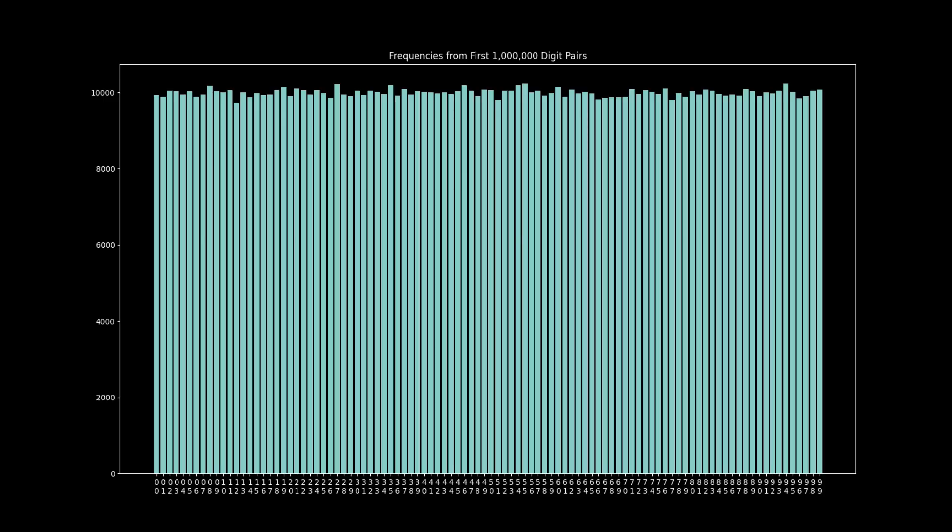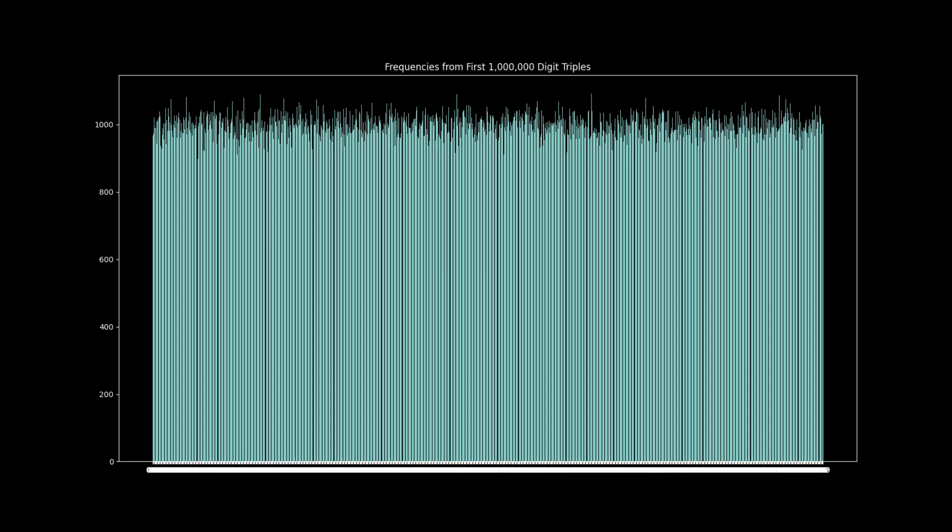This plot, for example, shows the frequency of every two-digit sequence in the first million digits of pi. And here's the frequency of every three-digit sequence.